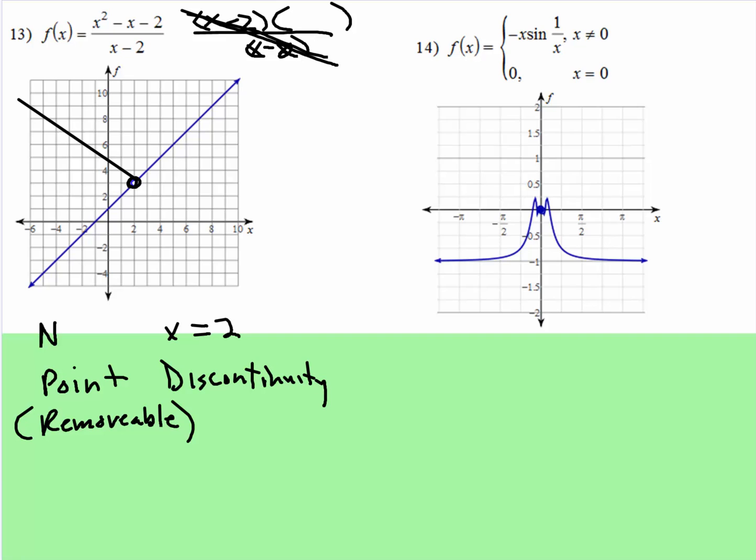And finally, oscillating. So in this instance right here, we are headed toward zero, and it sort of looks like it is continuous. But what you have to be aware of is the function. We can't ever have zero in the denominator, so this is not continuous where x equals zero, and this is oscillating discontinuity. And I think that's it.